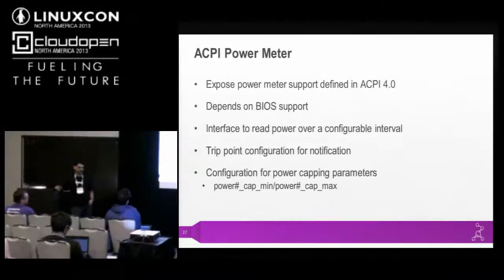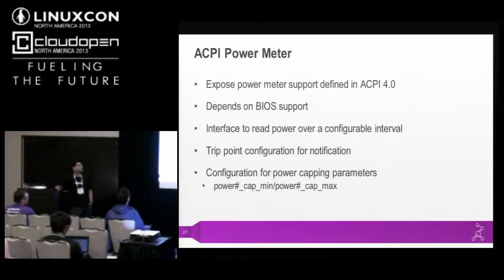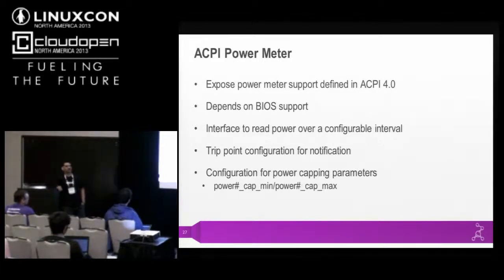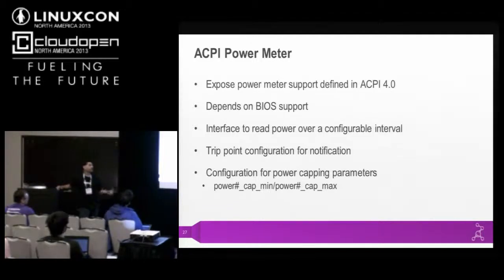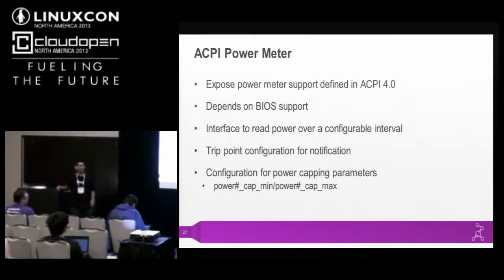The ACPI power meter was introduced during ACPI 4.0. It depends on the BIOS, so you may not have this capability, and it is currently used by some node managers. It allows measuring power between two time intervals and has trip points — when those are violated, you receive a notification. There are optional power capping parameters: a power cap min and max range. However, this is optional — you may have an ACPI power meter just for monitoring without any power capping capability, depending on whether your BIOS supports it.